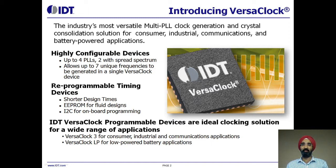Using IDT's spread spectrum techniques, VersaClock products are also an inexpensive and effective way to reduce EMI for FCC certification. IDT's VersaClock family contains parts with up to four internal PLLs, each individually programmable, allowing for up to seven unique frequencies.